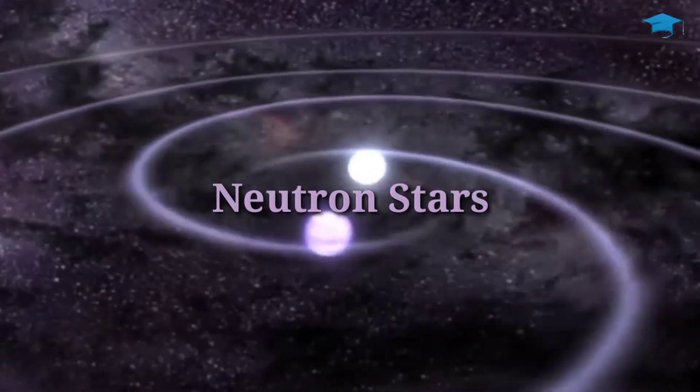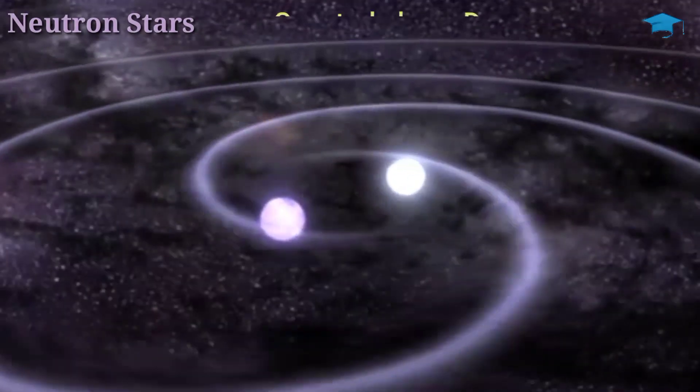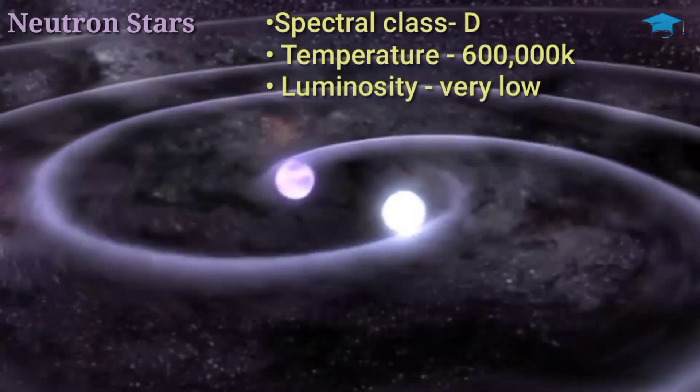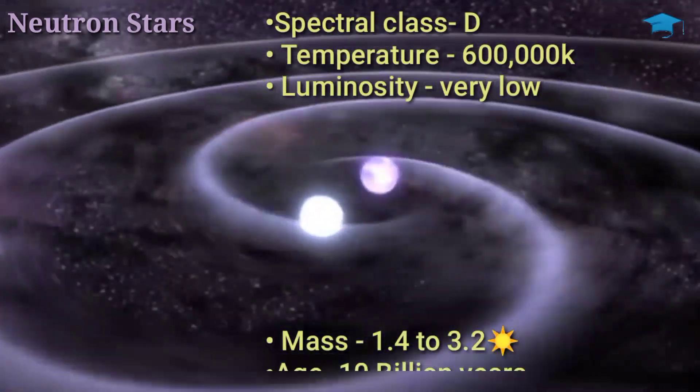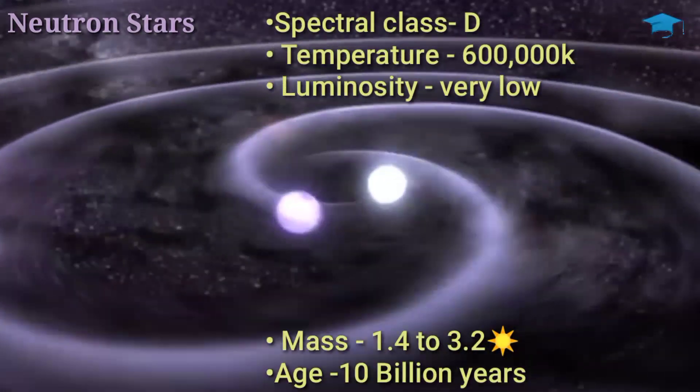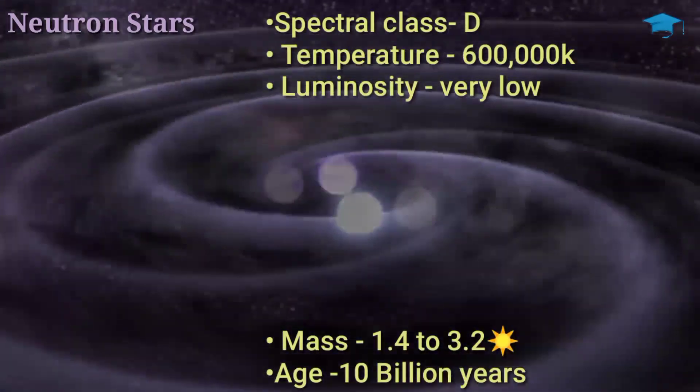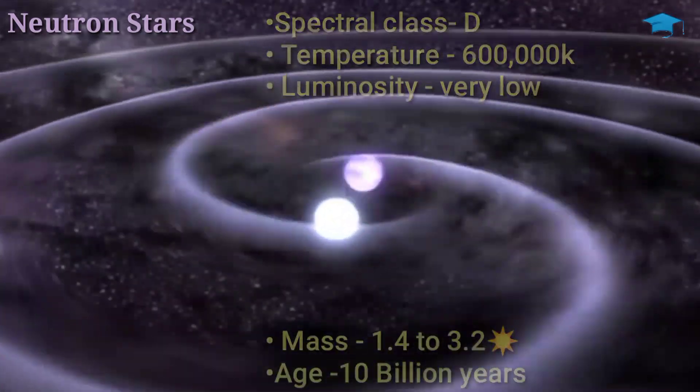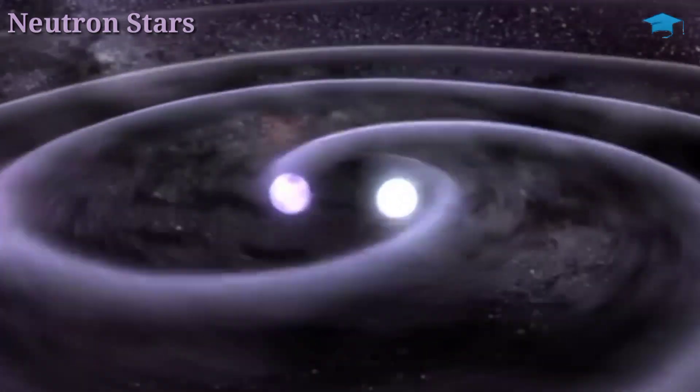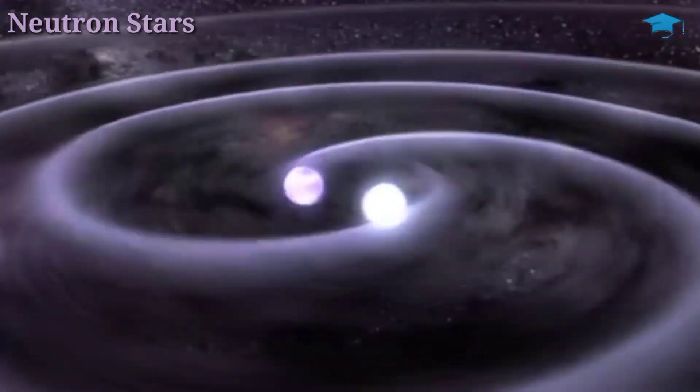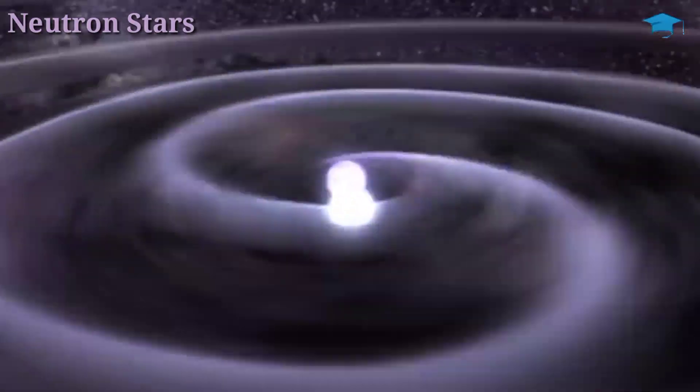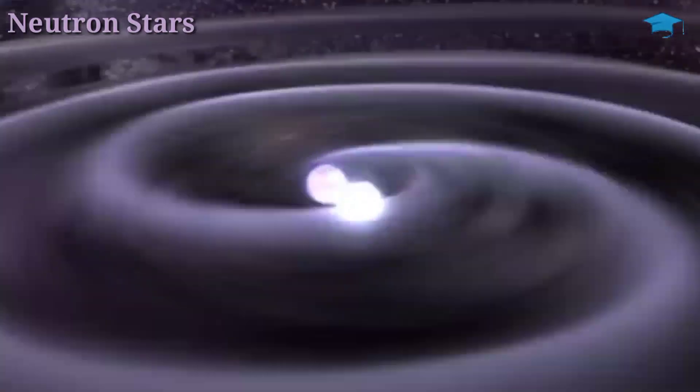Now comes neutron stars. These stars are of a spectral type D and temperature of around 600,000 Kelvin and very low luminosities. They have a mass of about 1.4 to 3.2 that of our sun and they live up to 10 billion years. Neutron stars are basically the collapsed core of massive stars that were compressed beyond the white dwarf stage during a supernova explosion. These stars consist of neutron particles with no electric charge. They can further collapse into black holes if they have more than 3 solar masses and these neutron stars have high spin.